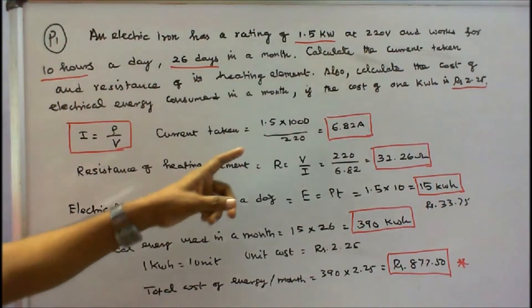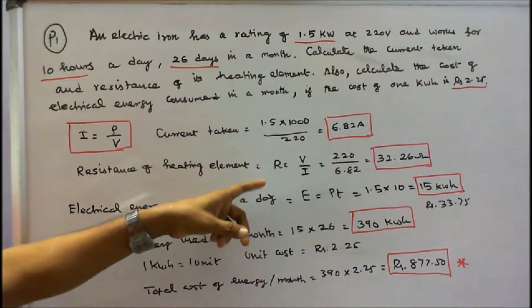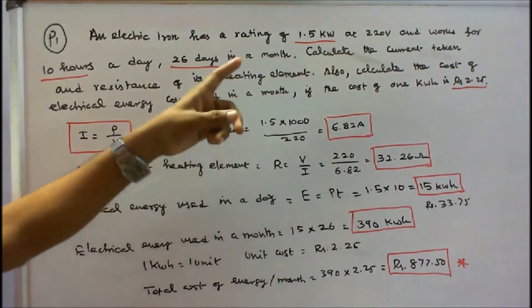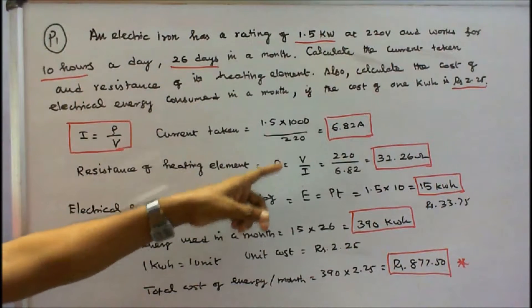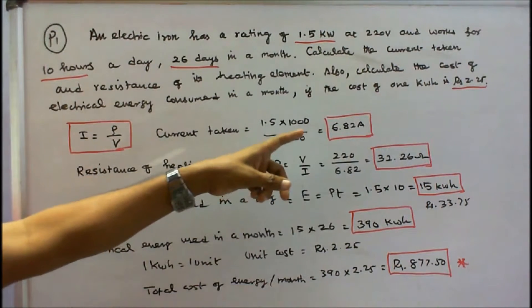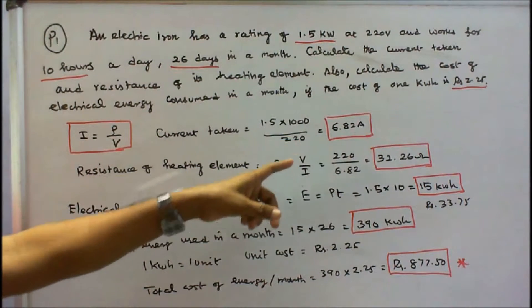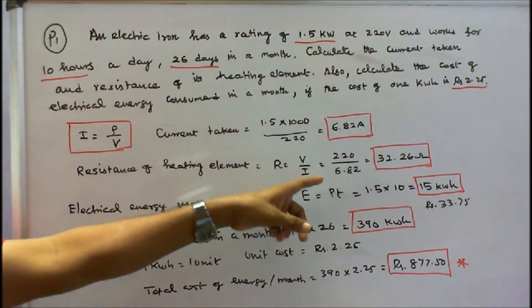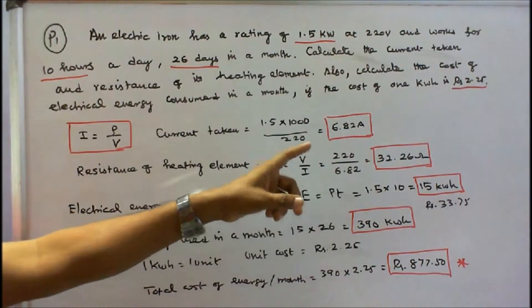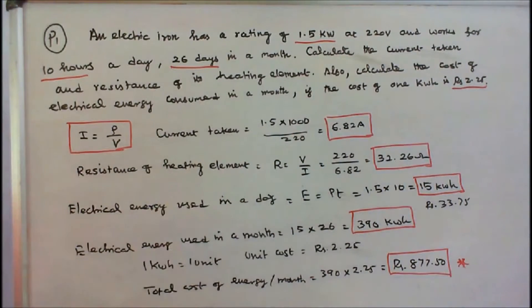Next is resistance of the heating element. R is equal to V by I. V is given as 220, and I we found to be 6.82. So 220 divided by 6.82 is equal to 32.26 Ohms.